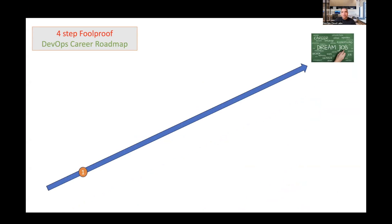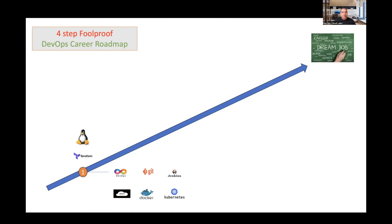The first stage is learning all the different technologies in DevOps, which would include Git, Jenkins, and AWS — or you can use any other cloud provider. We have Docker, we have Kubernetes, and you also need to learn Terraform, Linux, and JFrog Artifactory. These technologies comprise the basics of DevOps. You need to understand why they are used: why source control, why CI, why CD, what's the importance of Docker and Kubernetes, how to use Artifactory and Terraform.